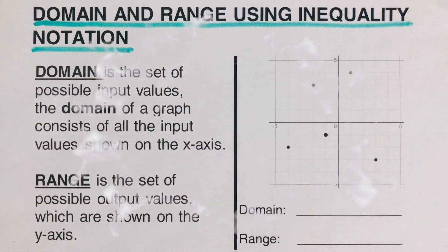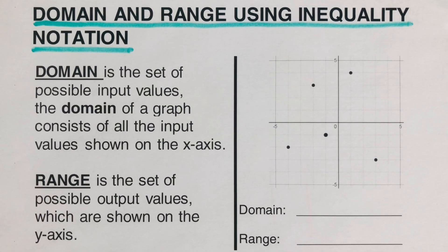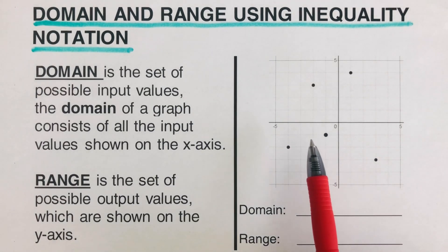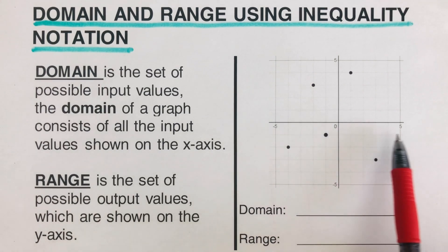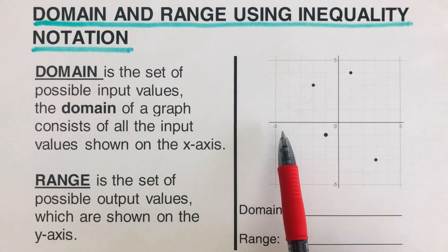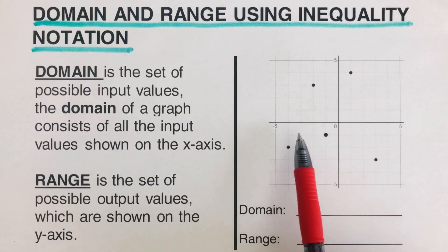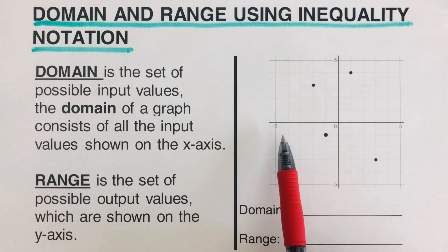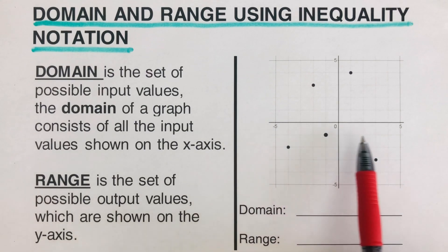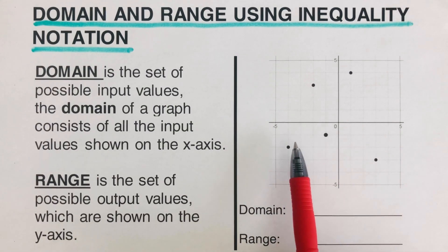Hello everyone. In this video, we are going to determine the domain and range and write it in inequality notation. Domain is the set of all possible input values. The domain of a graph are those values that are on the x-axis. In other words, domain is the set of all possible x values which will make the function work and will produce real y values.